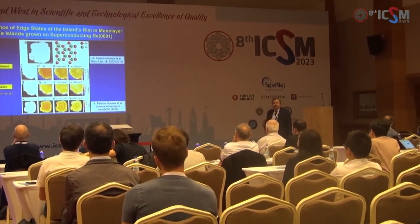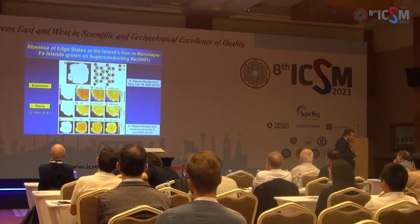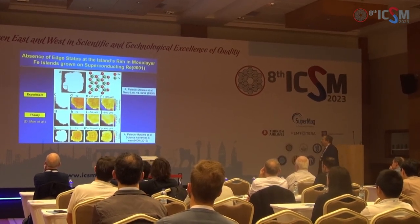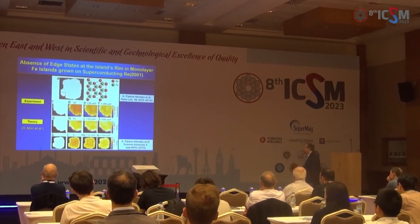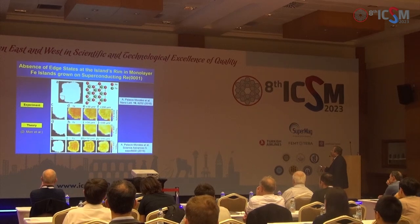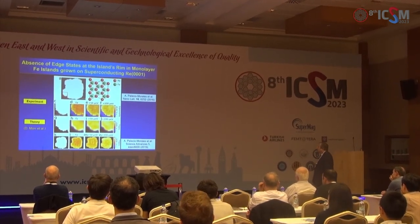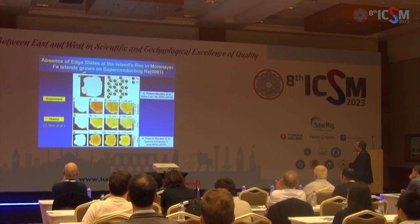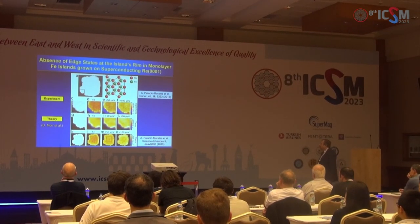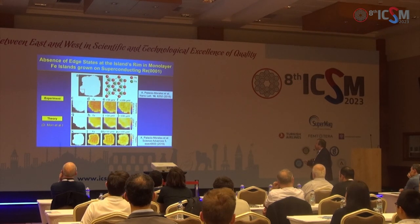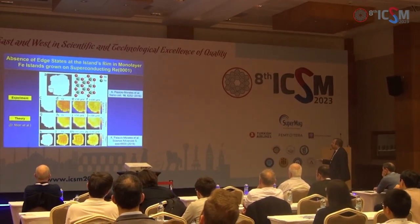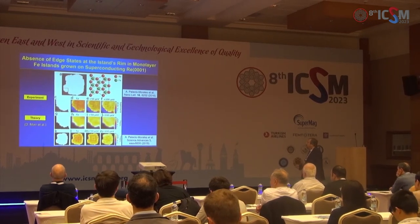What you have to do is choose a hybrid system where you can control the surface and interface stoichiometry, and simultaneously verify the theoretical predictions. We chose rhenium (0001), which is a superconductor with a transition temperature around 1.4 K, and grew epitaxial monolayer iron islands on top. The iron atoms occupy the hollow sites with respect to the Re(0001) lattice, yielding very nice epitaxial iron islands.